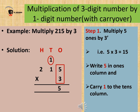Let us move on to multiplication of a 3-digit number by a 1-digit number with carryover. Let us understand this with the help of an example. We will have to multiply 215 by 3. Here, 'by' means multiply. So first we will align our numbers in the sum. 215 is our multiplicand and 3 is our multiplier. These are also known as factors. In step 1, we will multiply 5, which is at the ones place, by 3, which is our multiplier. So 5 multiplied by 3 equals 15.